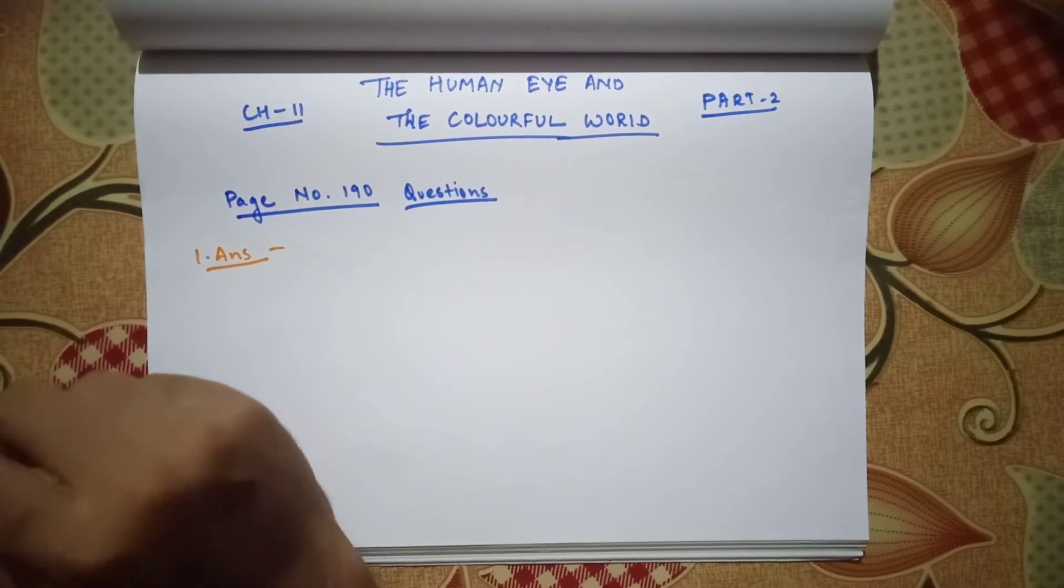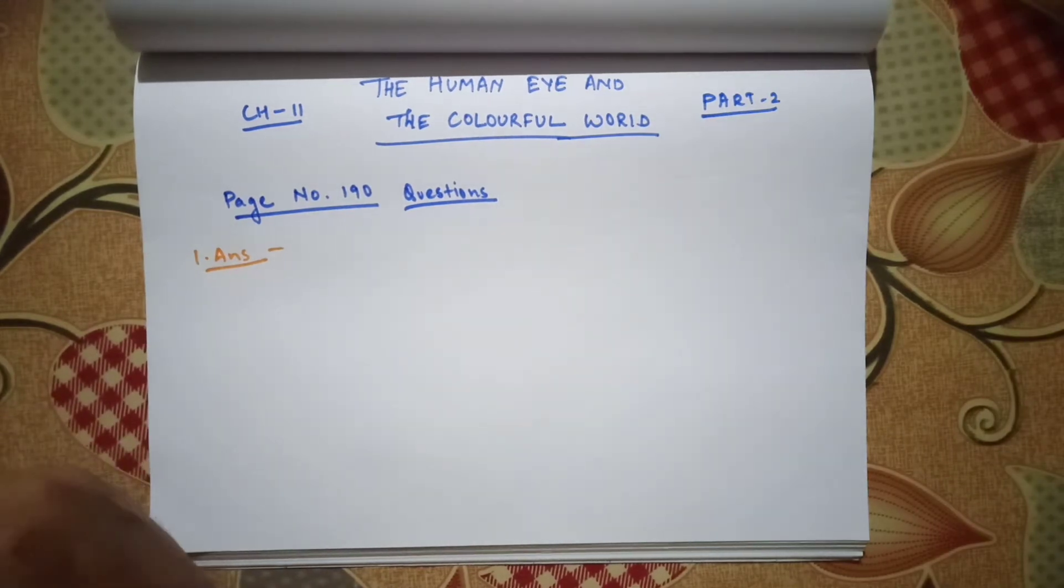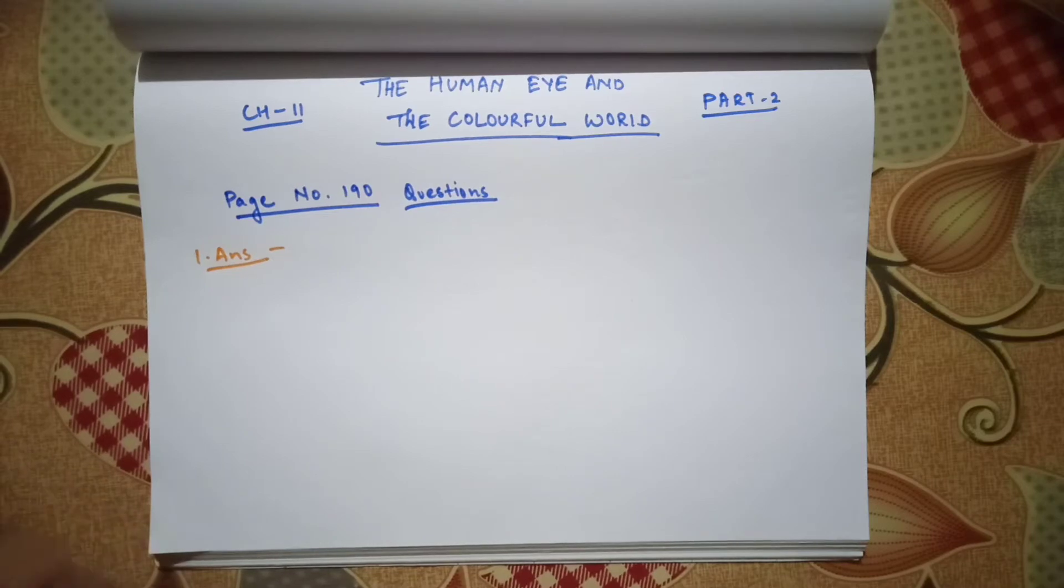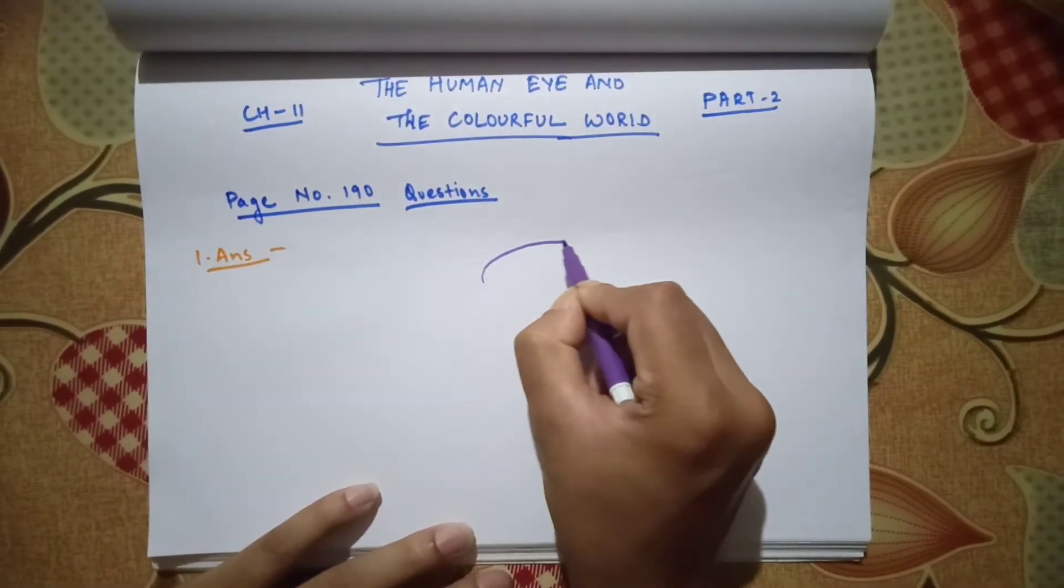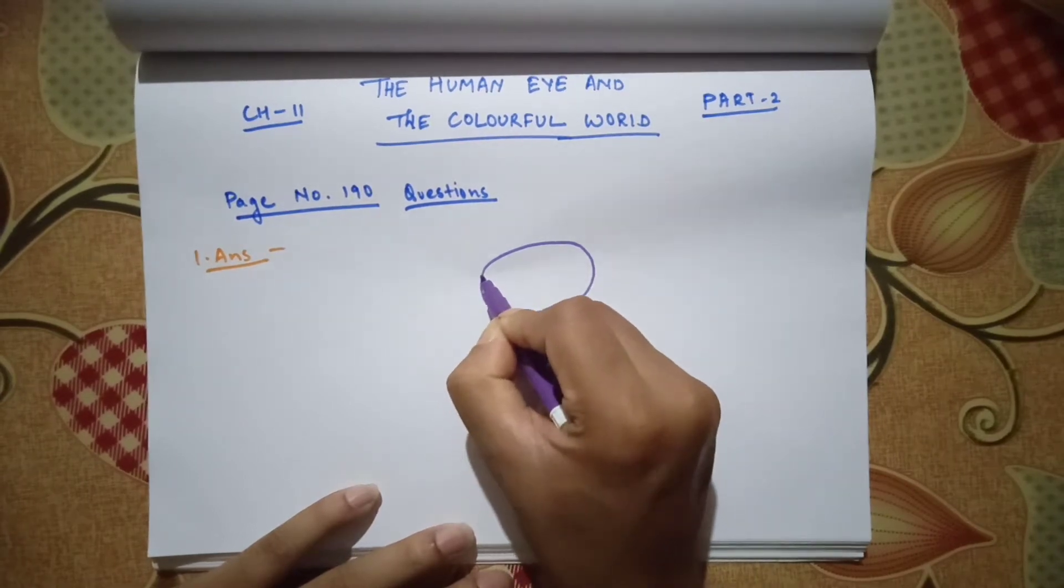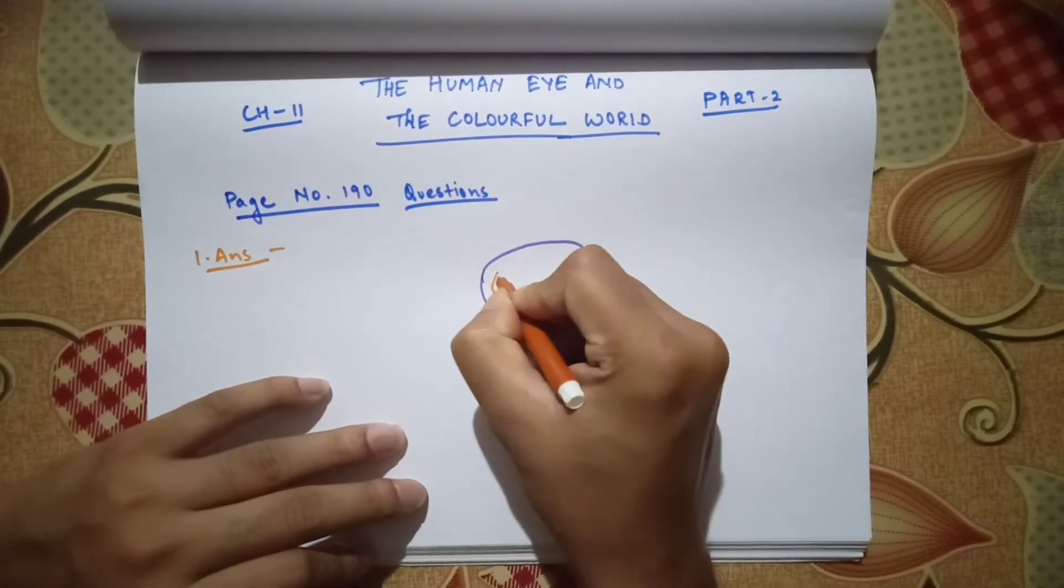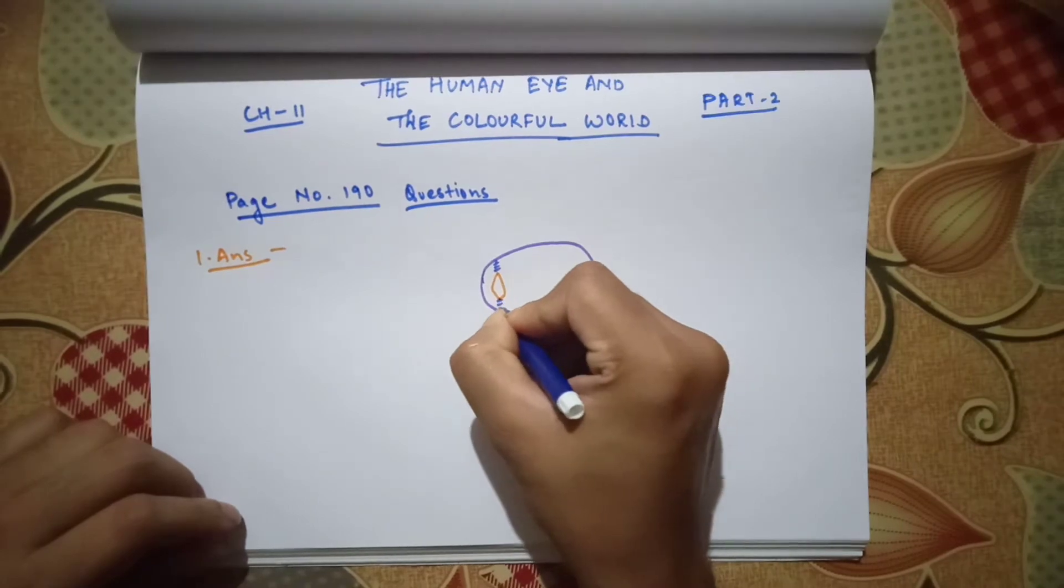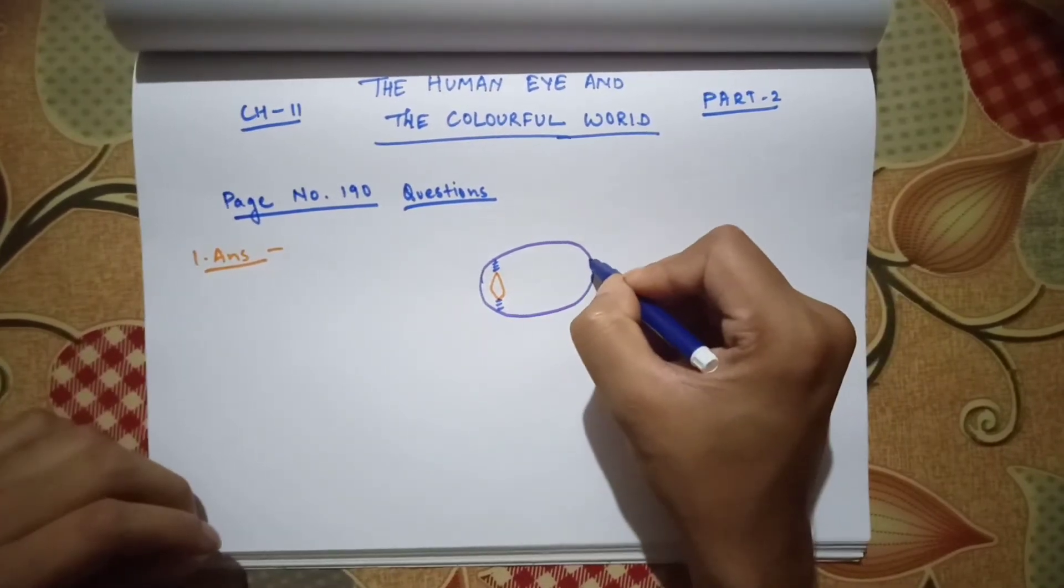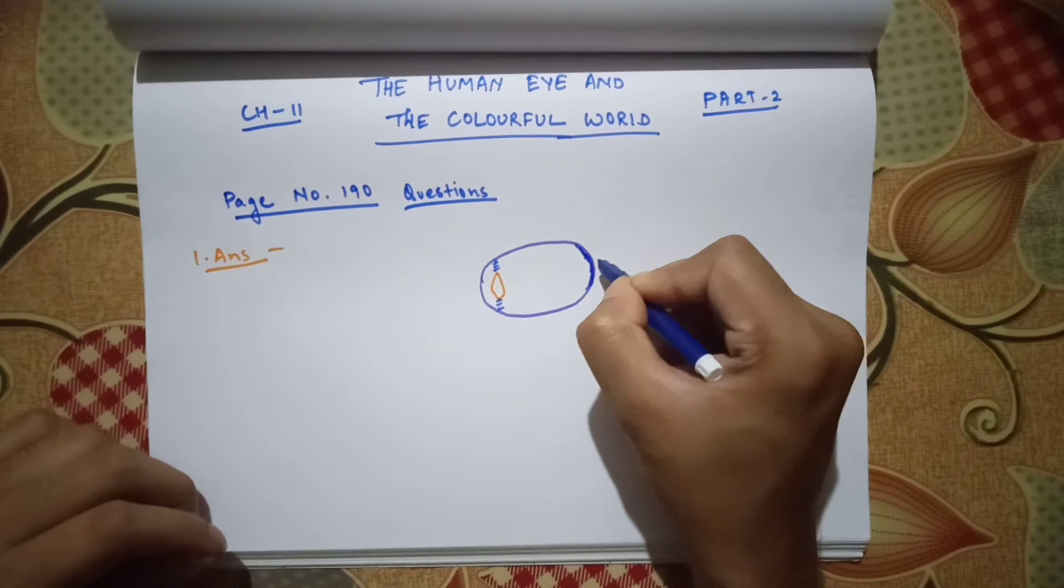The question asks what is meant by the power of accommodation of the eye. We have studied this in the earlier video. Let us draw a simple diagram. Let us suppose this is the eyeball, then this is the lens, then this is the ciliary muscle, and this point is the retina.